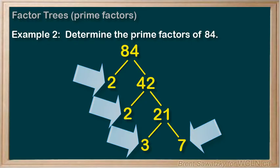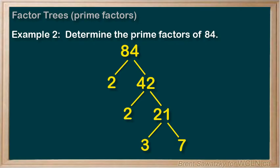And if we multiplied all those prime factors, 2 times 2 times 3 times 7, we would get back to 84. And so that's a factor tree, a nice easy way to break down a number into its prime factors.